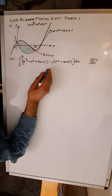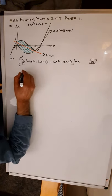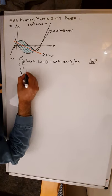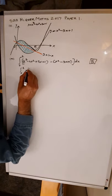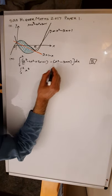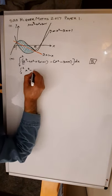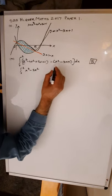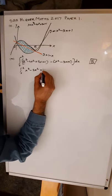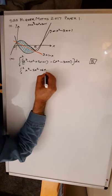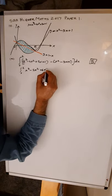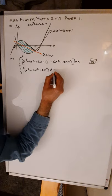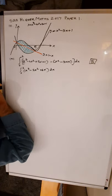You take this quadratic away from the cubic. Integral from 0 to 2: there's only one x cubed term; minus 4x squared minus x squared gives minus 5x squared; plus 3x minus minus 3x gives plus 6x; and 1 minus 1 disappears. So the integrand is x cubed minus 5x squared plus 6x, with respect to x.